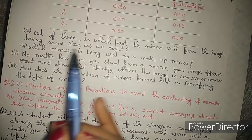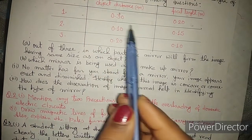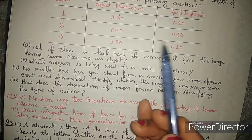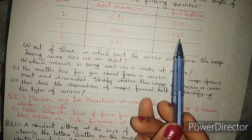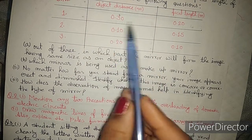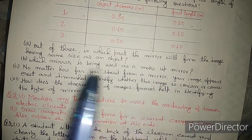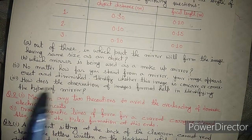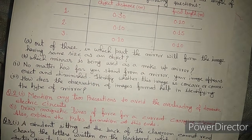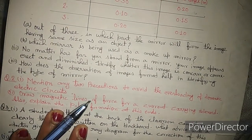The first part asks: in which case will the image be the same size as the object? For a concave mirror, the image is the same size as the object when the object is placed at the centre of curvature.